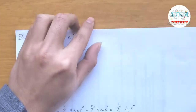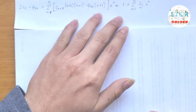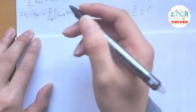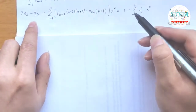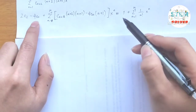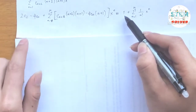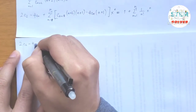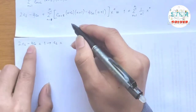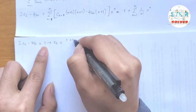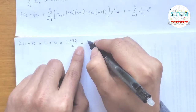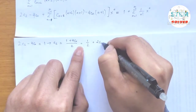Now equating coefficients. For the constant terms: 2c₂ minus 4c₀ equals 1. Solving for c₂: c₂ equals (1 + 4c₀) divided by 2, which simplifies to one-half plus 2c₀.